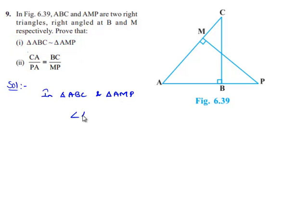angle ABC is equal to angle AMP is equal to 90 degrees, as he has given that ABC and AMP are right-angled triangles, right-angled at B and M respectively.